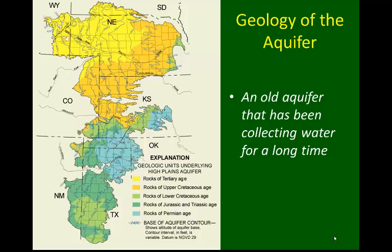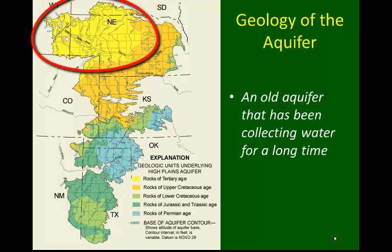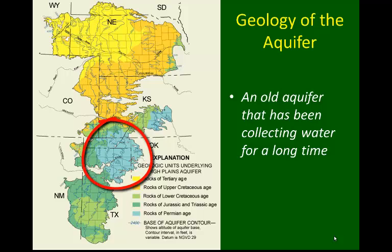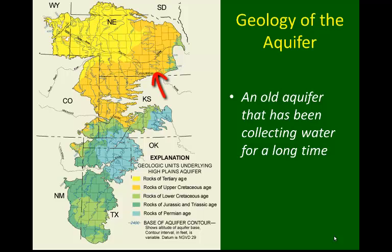An aquifer is only as good as the geologic makeup. We see a variety of geologic formations that make up the aquifer, from the Tertiary age geology in the north in Nebraska, moving south into the Permian Age rocks in Texas. We can also see the contour lines for the altitude of the base of the aquifer, with elevations ranging from about 2,000 feet to over 5,000 feet. Because these rocks are fairly old, the aquifer has been collecting water unimpeded for a long period of time.